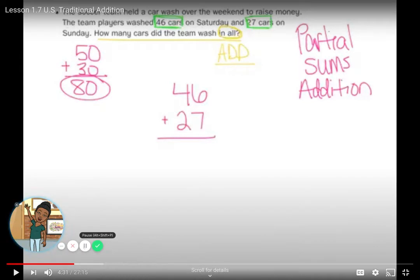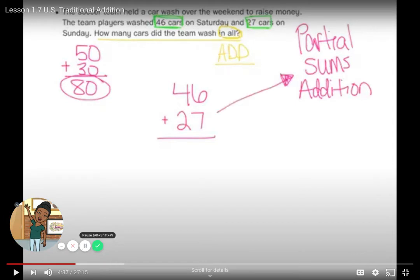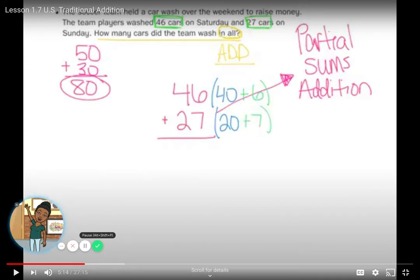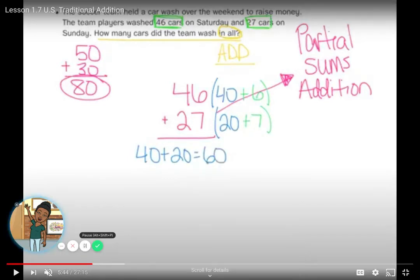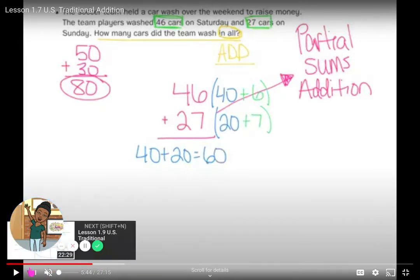We're going to use partial sums addition. I know that 46 is the same as 40 tens plus 6 ones, and 27 is the same as 20 tens plus 7 ones. This is place value practice coming into play — we just wrote the numbers in expanded form. Now let's solve.